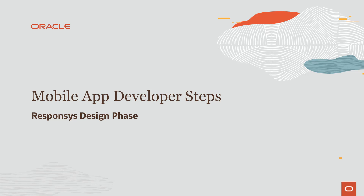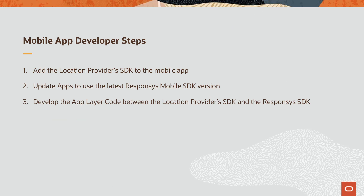The next few steps in this setup are specifically for mobile app developers. First, as a developer you want to add the location provider's SDK to the mobile app. Next, update the app to use the latest Responses mobile SDK — at minimum the SDK should be at least version 19a or 6.40. Finally, develop the app layer code between the location provider's SDK and the Responses SDKs. Refer to the mobile SDK documentation linked in the video description below for sample code for Android and iOS, where you can find details about each API.